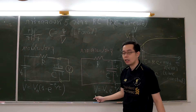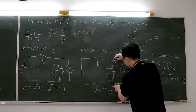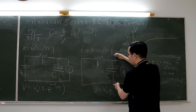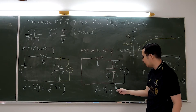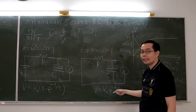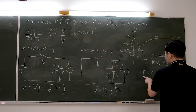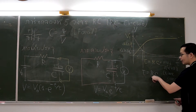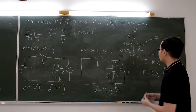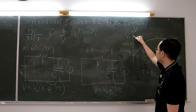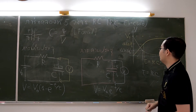V is the potential difference at any time t. V₀ is the maximum potential difference when the capacitor is fully charged. V equals V₀ multiplied by e to the power of negative t divided by τ. T is any time and τ is the time constant, equal to resistance multiplied by capacitance. When we draw a graph, we see that the potential difference decreases with time t.